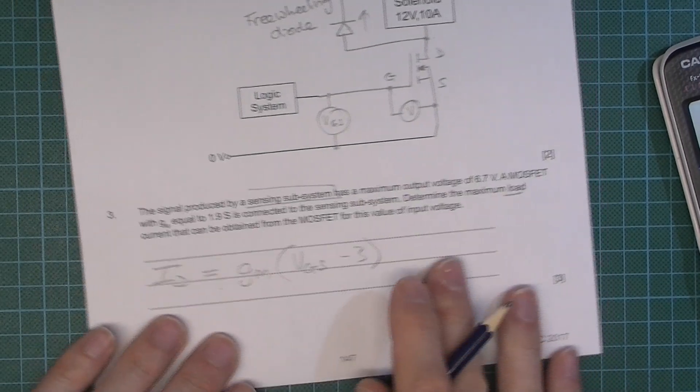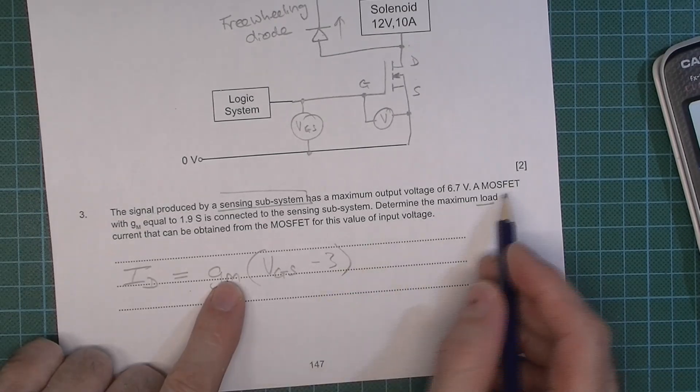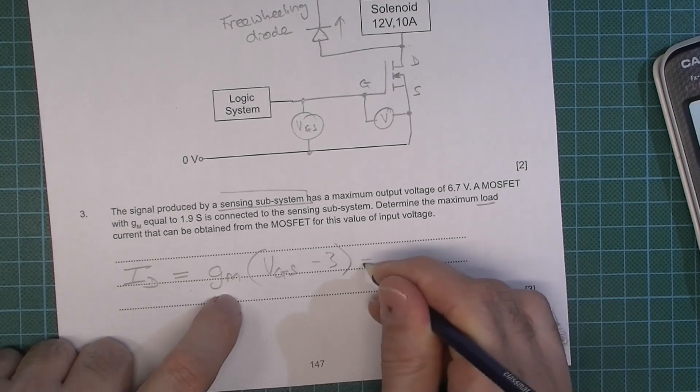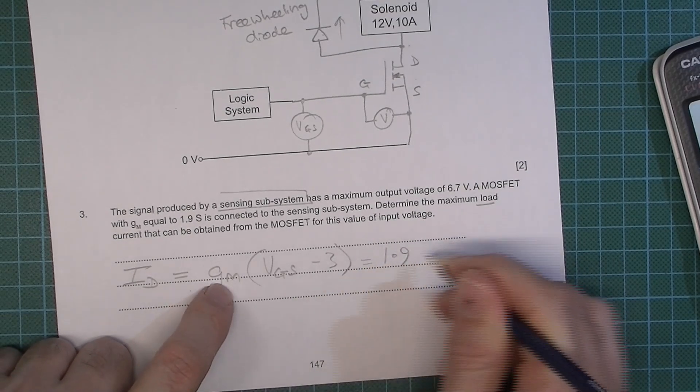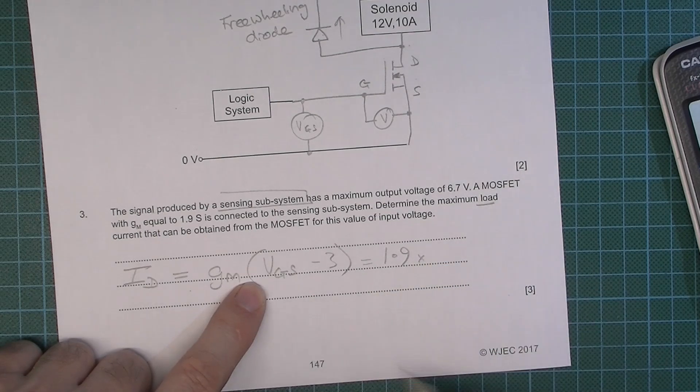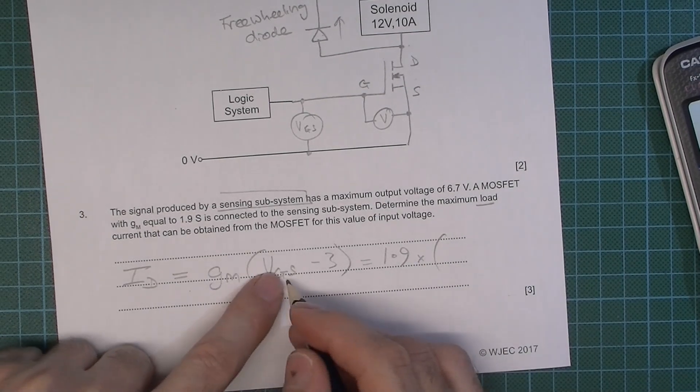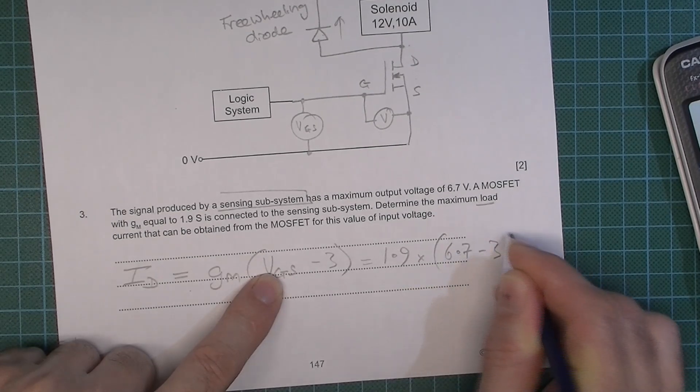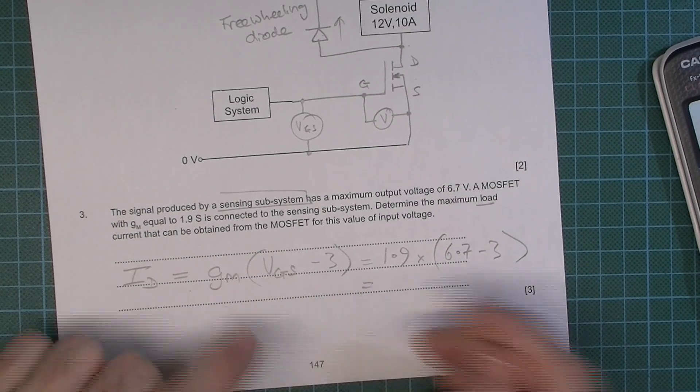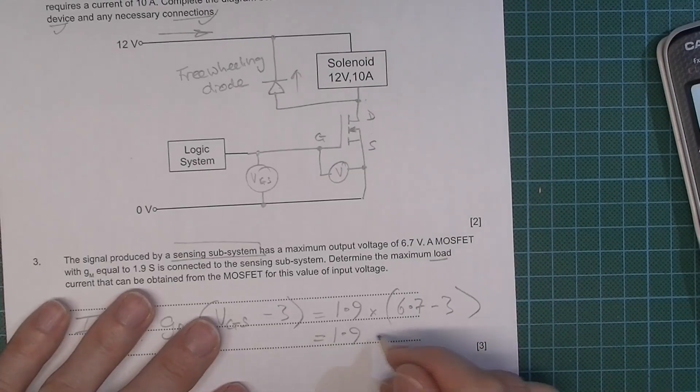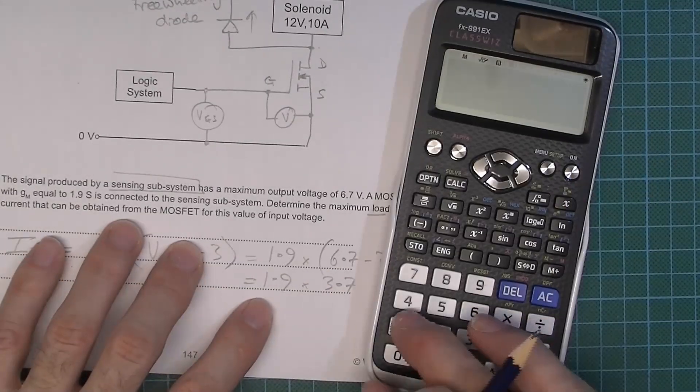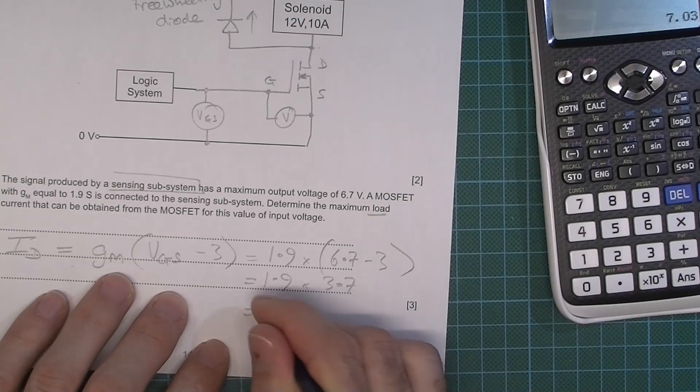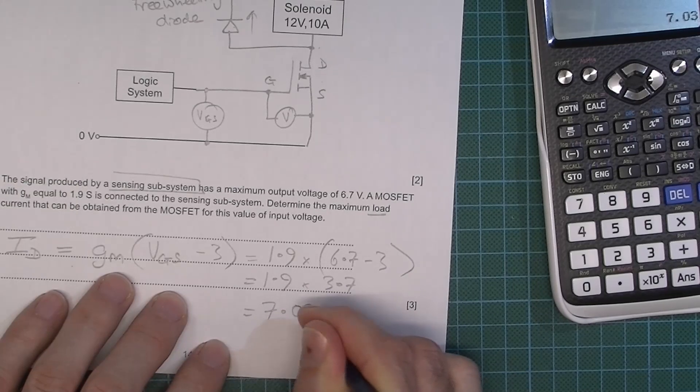Minus 3. Okay so now what have we got. The Gsub M is 1.9. So 1.9. And then it's going to be multiplied by VGS. We've got 6.7. 6.7 minus 3. Okay so then. So 1.9 times 3.7 gives us 7.03. 7.03 amps. That's the maximum current that we could have.